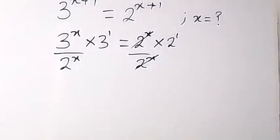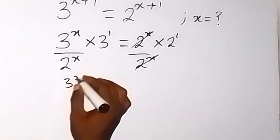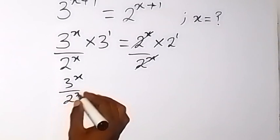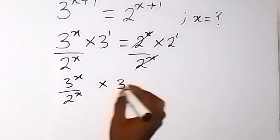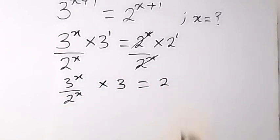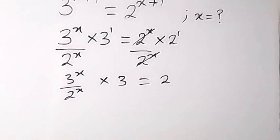Then what we have on this side is 3 raised to power x over 2 raised to power x times 3, which is equal to 2 on this side. Also we can separate the number 3 by dividing both sides by 3.